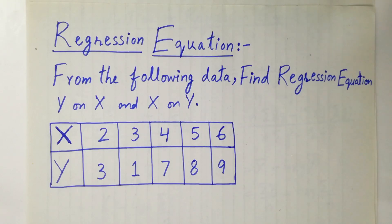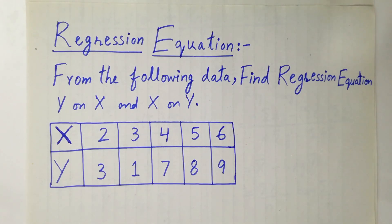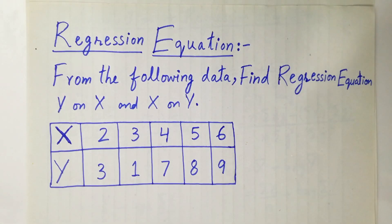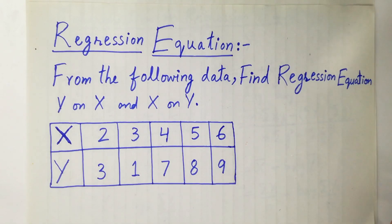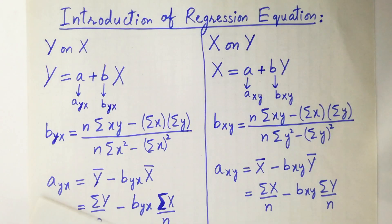Hello friends, today we are going to learn how to find the regression equation in two cases: y on x and x on y. So let's get started. Here data is given: x is 2, 3, 4, 5, 6 and y data is 3, 1, 7, 8, 9.